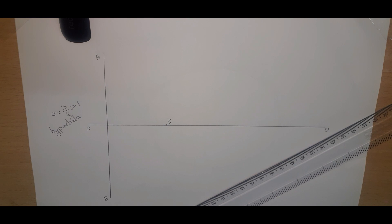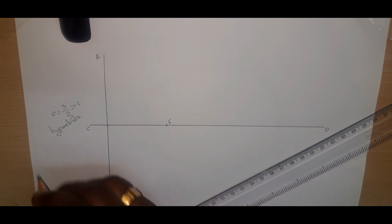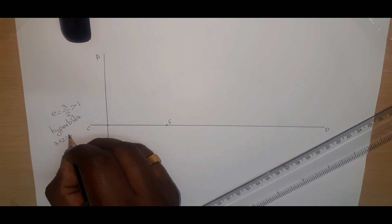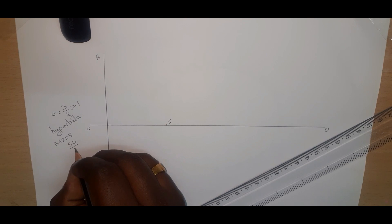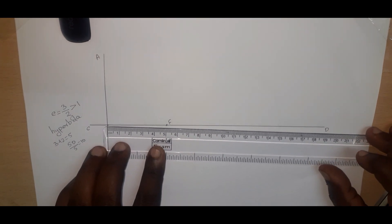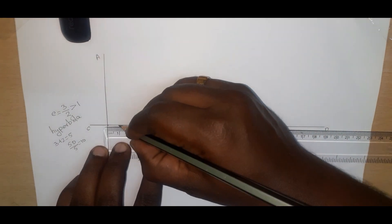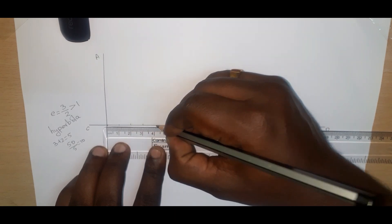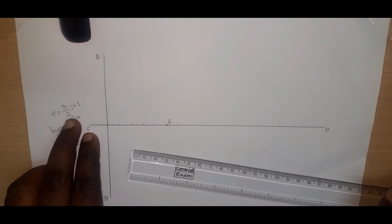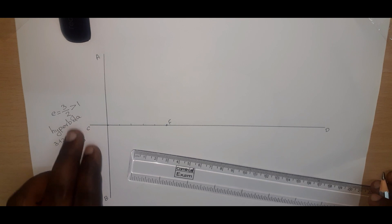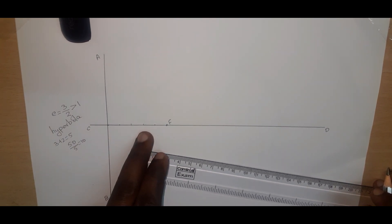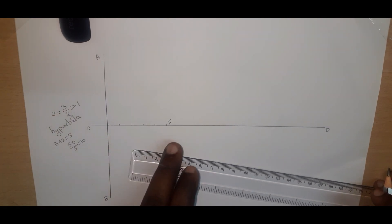So 3 plus 2 equals 5 divisions. 50 divided by 5 equals 10, so each division will be 10 mm. We can mark 1, 2, 3, 4, and 5 divisions. The denominator side should be nearer to the directrix and the numerator value should be nearer to the focus.